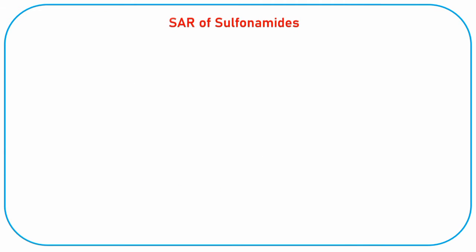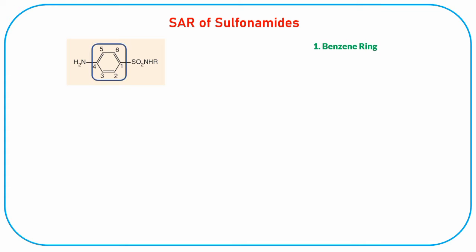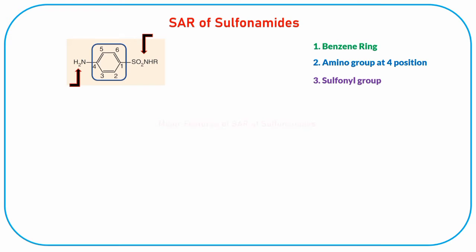Before moving towards the SAR of sulfonamides, first let's look at the structure of sulfonamides. It mainly consists of three main parts that are responsible for the structure-activity relationship of sulfonamide antibiotics: Number 1, benzene ring; Number 2, amino group at the 4 position; Number 3, sulfonyl group.